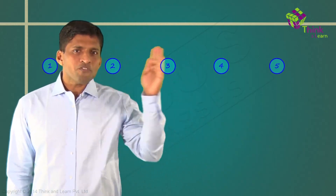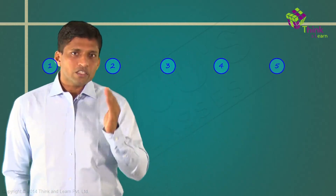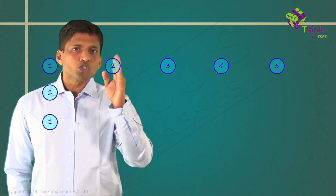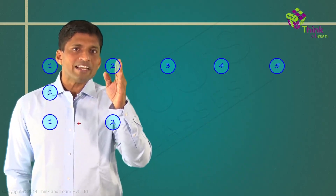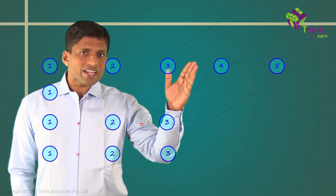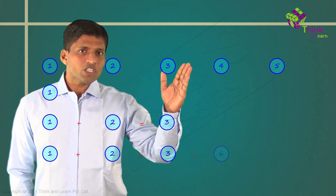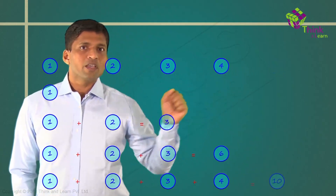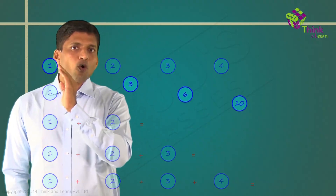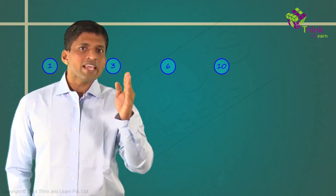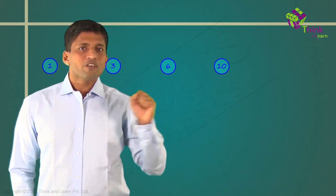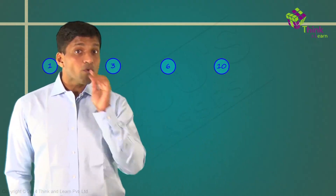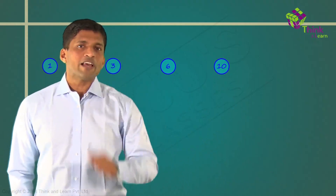If I take sums of consecutive natural numbers, the numbers I get are: 1; 1+2 gives 3; 1+2+3 gives 6; 1+2+3+4 gives 10. So these numbers — 1, 3, 6, 10 — we call them triangular numbers.